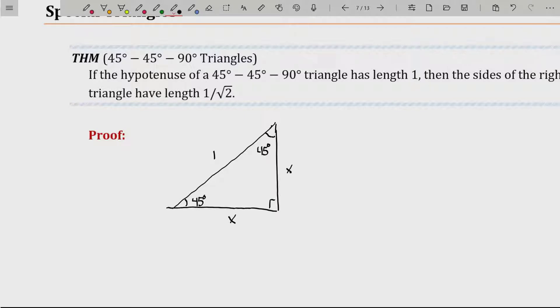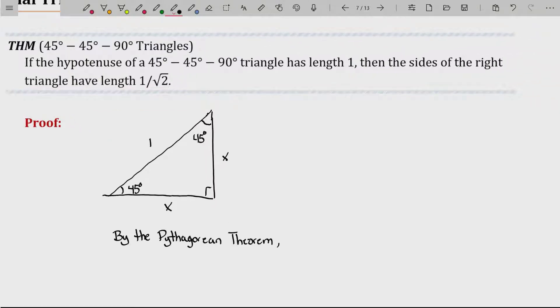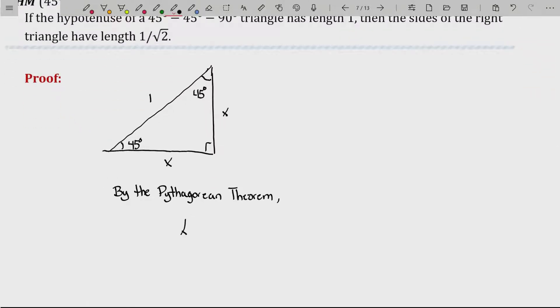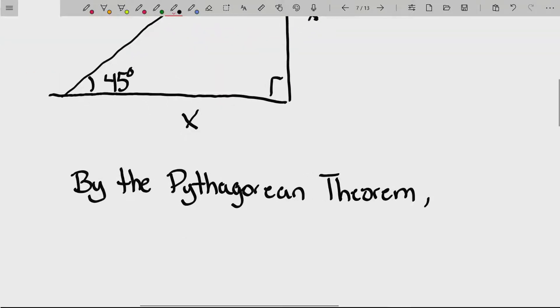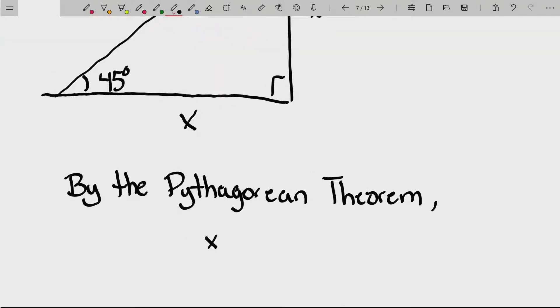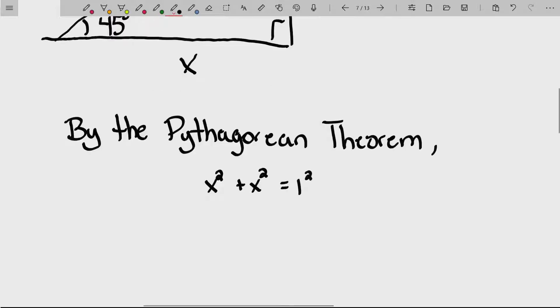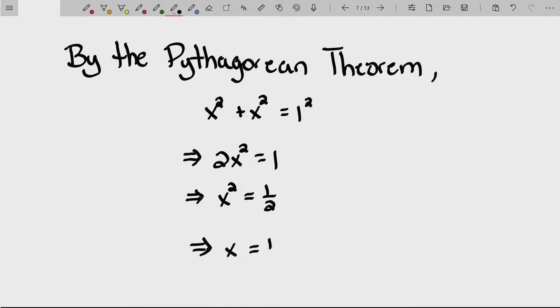Pythagorean theorem tells us that side squared plus side squared is equal to hypotenuse squared. And that easily reduces down to 2x squared is equal to 1, or in other words, x squared is equal to a half. And now you can take the square root of both sides, and x will equal plus or minus 1 over root 2.